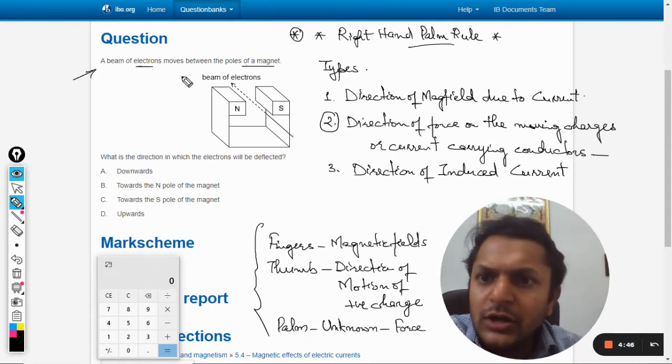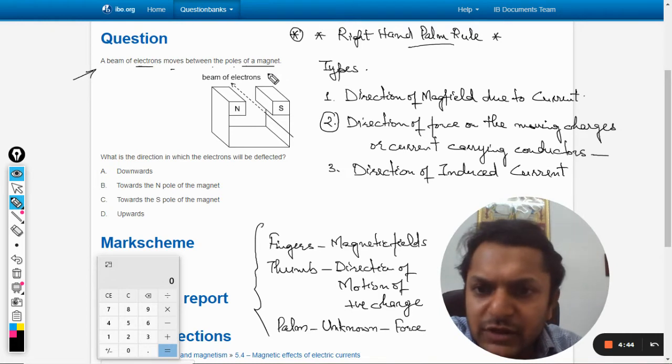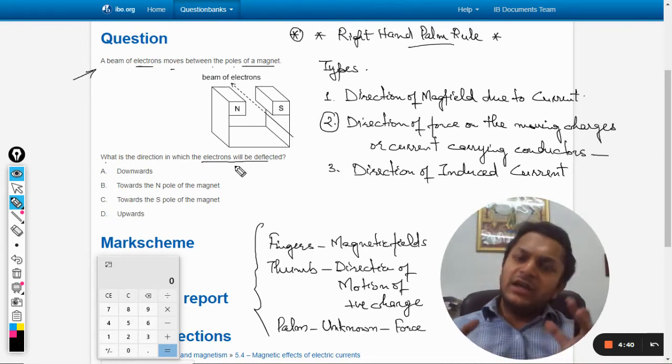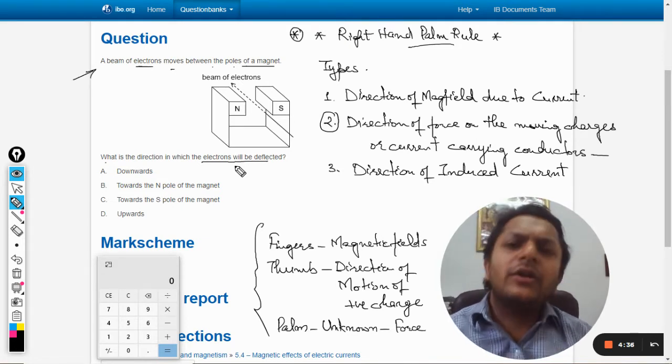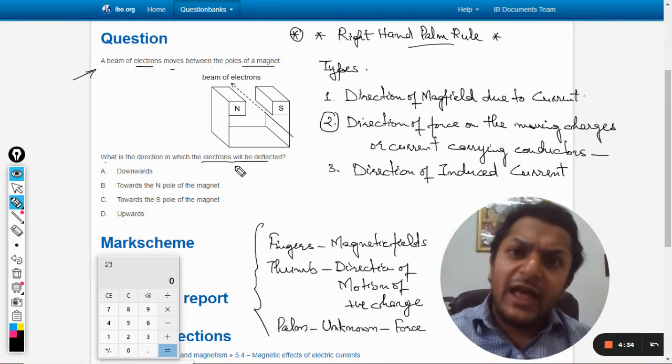moves between the poles of the magnet as shown. What is the direction in which the electrons will be deflected? In these kind of questions, every book talks about Fleming's right hand rule and left hand rule.